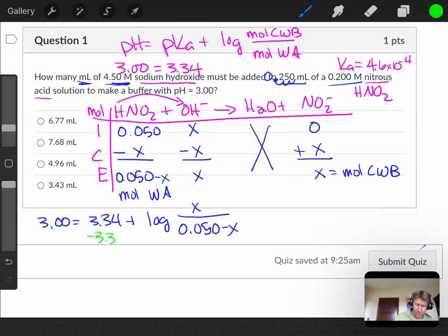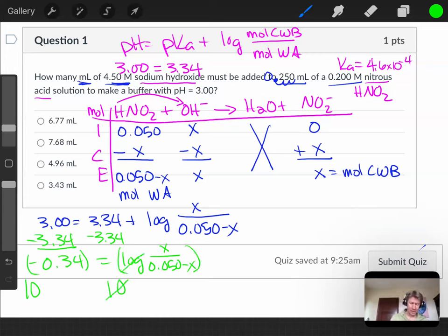So subtract 3.34 from both sides, that's going to leave me with minus 0.34 equals log of X over 0.050 minus X, and then we're going to 10 to that of both sides, and 10 to that cancels out my 10 to that in my log. I'll do 10 to the minus 0.34, 10 to that is 0.46 equals X over 0.050 minus X, and from there you're going to solve for X. And X is going to be both your moles of conjugate weak base and your moles of hydroxide ions.